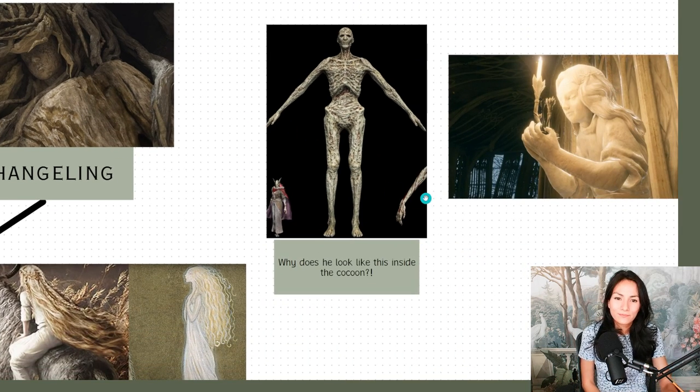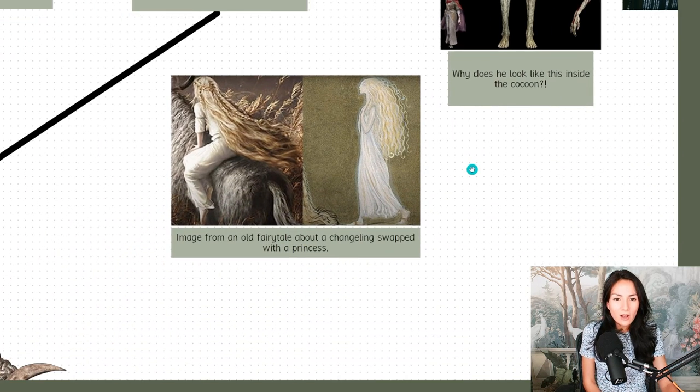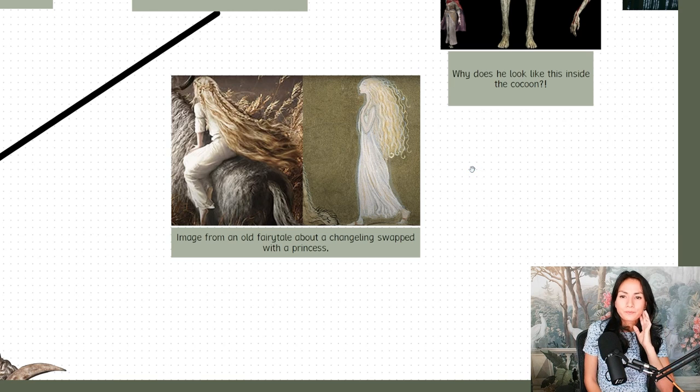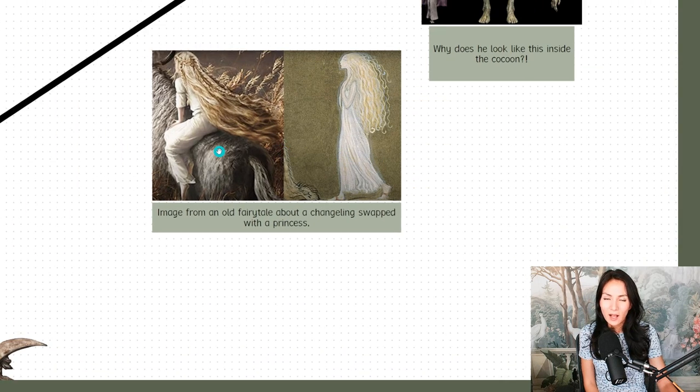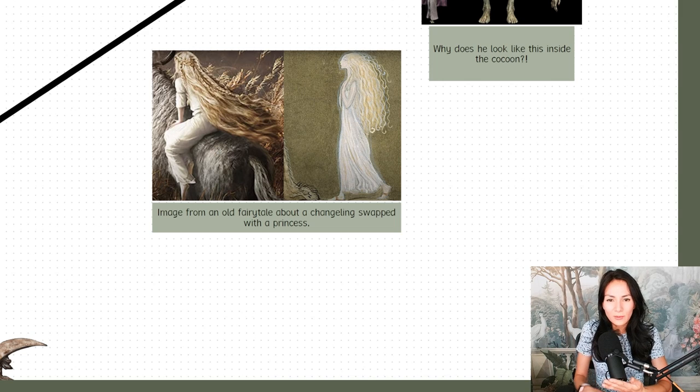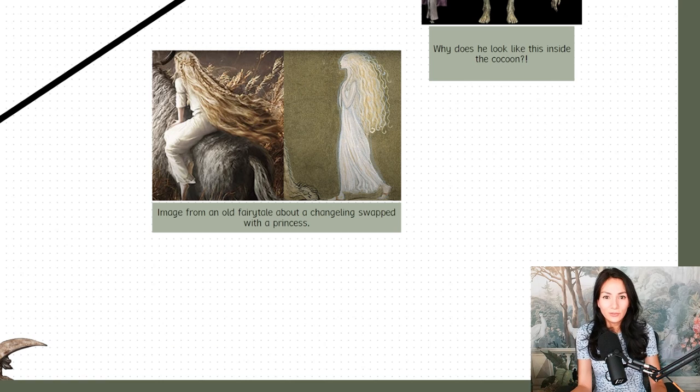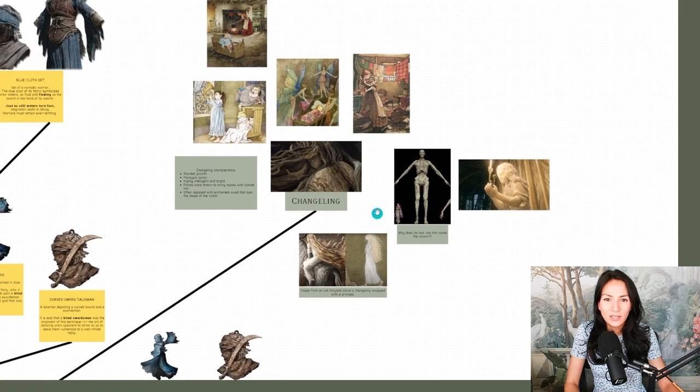Another thing about changelings that is really poignant is they would often also be a block of wood or a log that was enchanted to look like the baby. I think this is a callback to Miquella's body inside the Haligtree, this wooden corpse that you see in the room where you fight Malenia. When Mohg kidnaps Miquella, he's not actually kidnapping Miquella. He's kidnapping the fairy changeling.